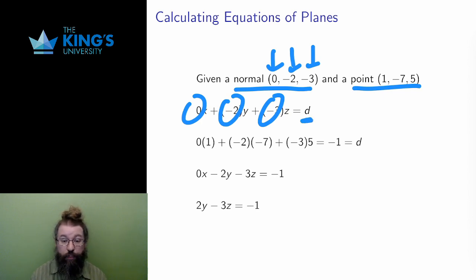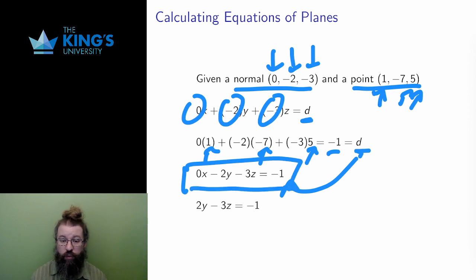However, I have a point on the plane. I can put that point into the left side of the equation and calculate. 0 times 1 plus negative 2 times negative 7 plus negative 3 times 5 works out to negative 1, which is equal to the right side, which is equal to d. Therefore, d is equal to negative 1, and I have all the information.